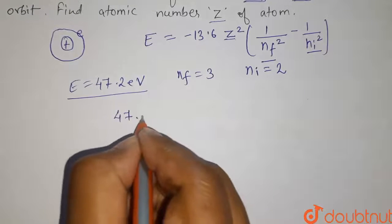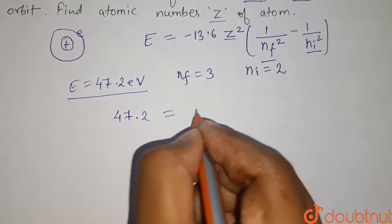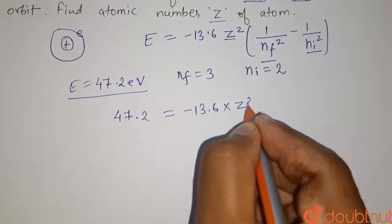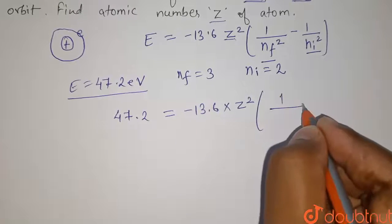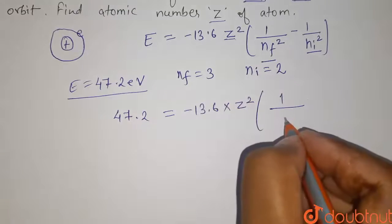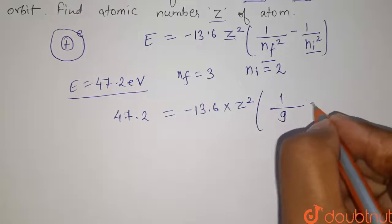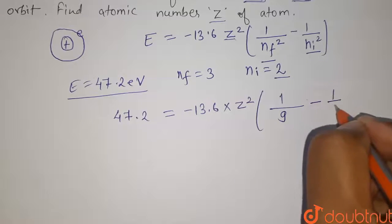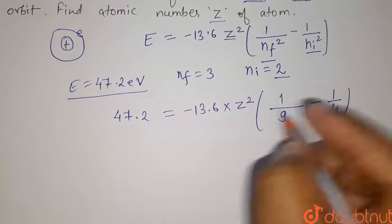The value of E is 47.2 is equals to minus 13.6 into Z square upon 1 upon n final square means 3 square, so it will be 1 upon 9 minus 1 upon n initial square means 2 square, so it will be 1 upon 4.